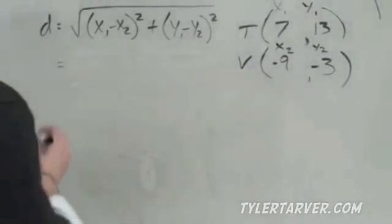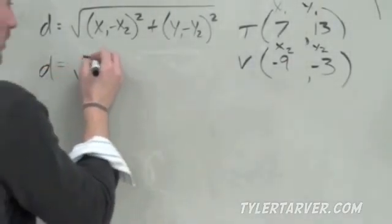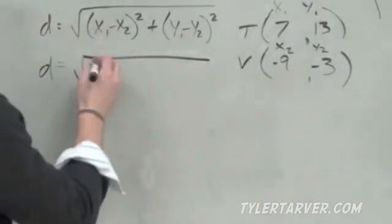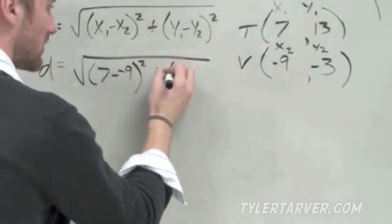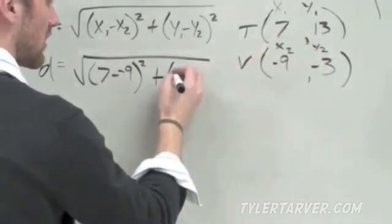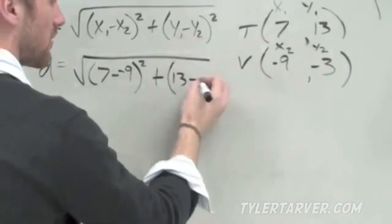In case you noticed earlier, I screwed that up. So, we're finding the distance. We do our square root sign. Parentheses, x1 is 7 minus x2, which is negative 9. Close your parentheses, squared, plus y1, which is 13, minus y2, which is negative 3, squared.